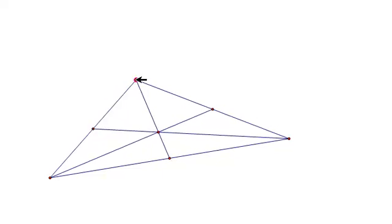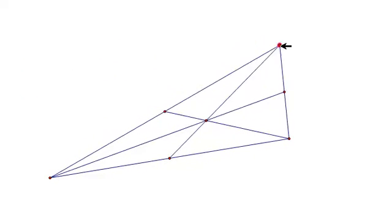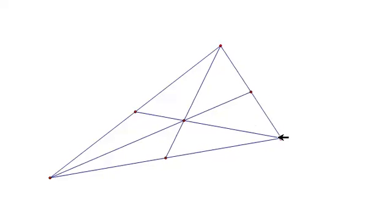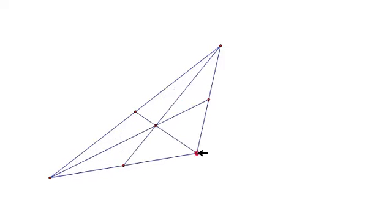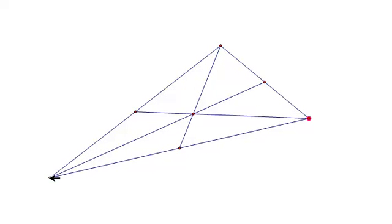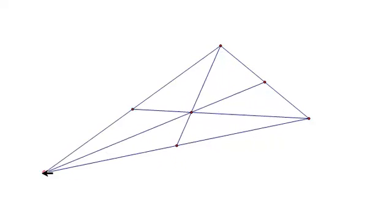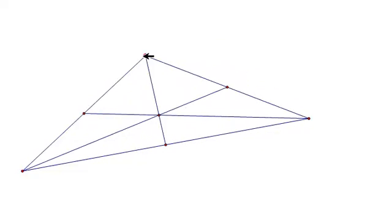No matter how you move the triangle around, that centroid still exists and it's always going to be inside the triangle. Keep in mind, it is interesting that these three line segments, the three medians, all intersect in one point.